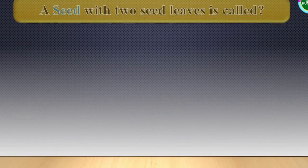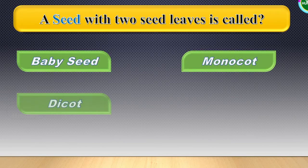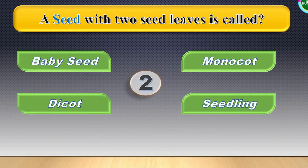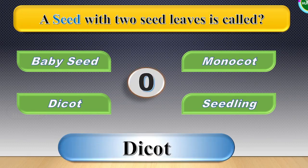Next question: A seed with two seed leaves is called. The options are visible in the screen. Your time starts now. The correct answer is dicot.